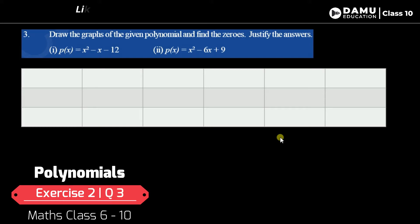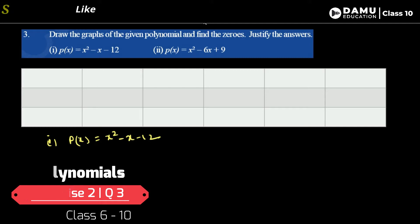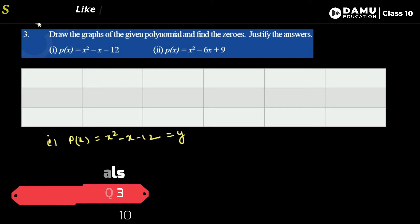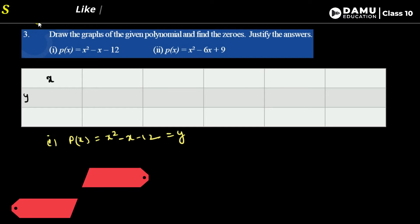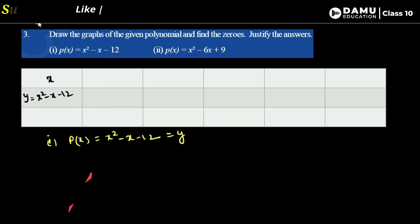So here, let us write what are the x values we are going to substitute. If y will be equal to 0, that is the equation. So let us take the first one: P of x will be equal to x square minus x minus 12. This will be equal to y. So let us write x and y equals x square minus x minus 12.